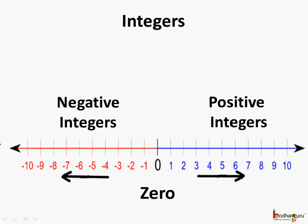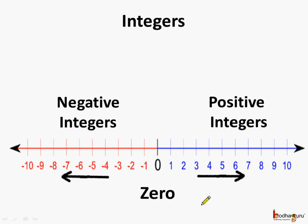Here is the number line representing the integers. If we move towards the right side, the value of the integer increases — like 3 is greater than 2, 4 is greater than 3, 5 is greater than 4, and so on.